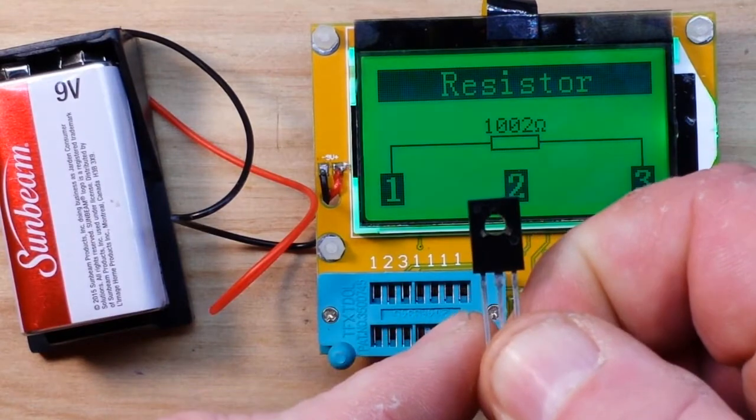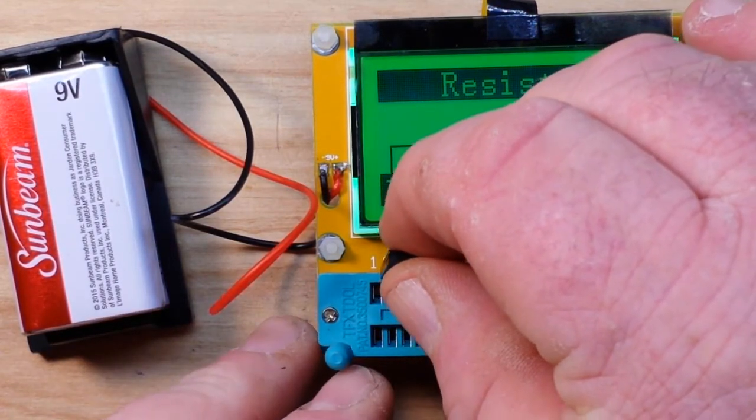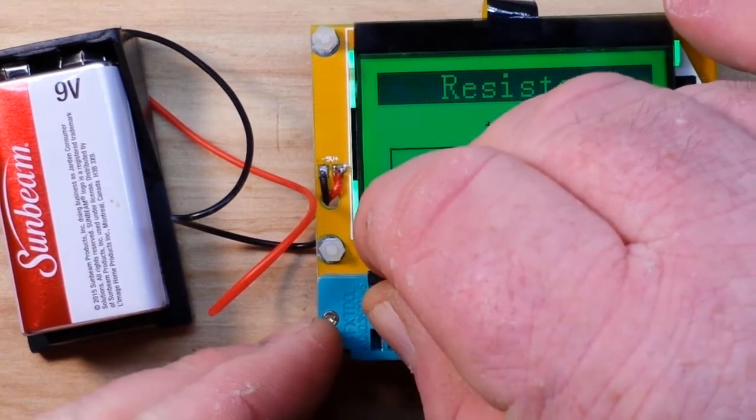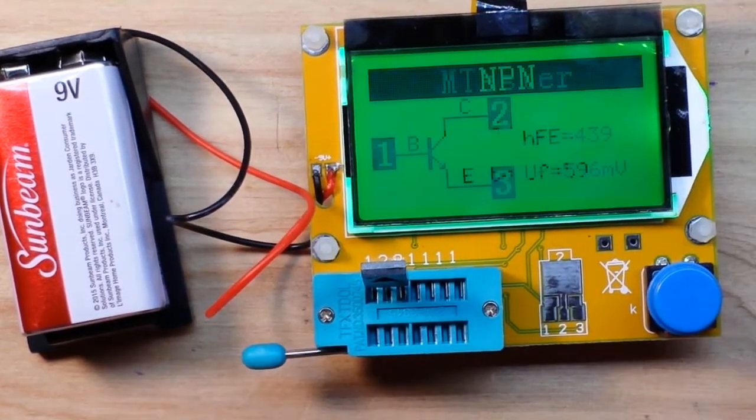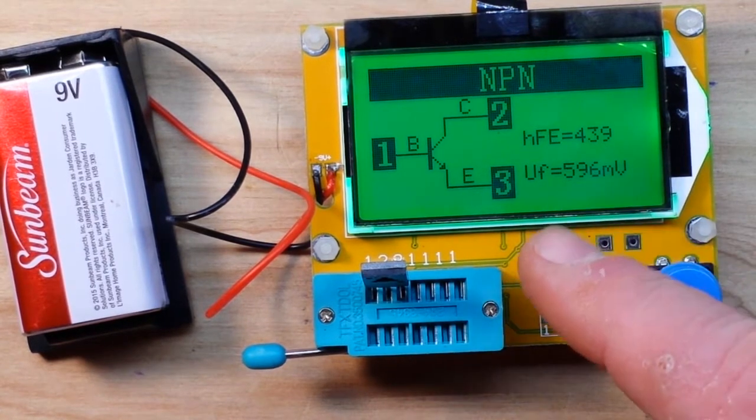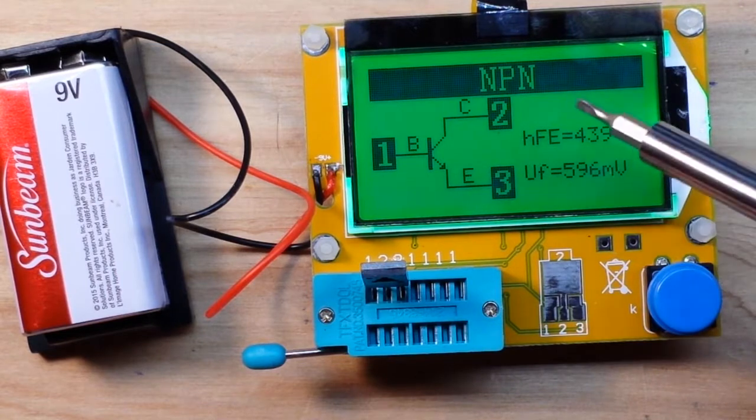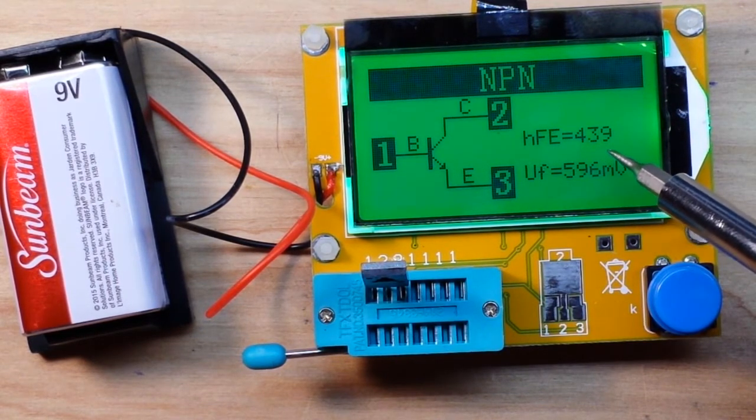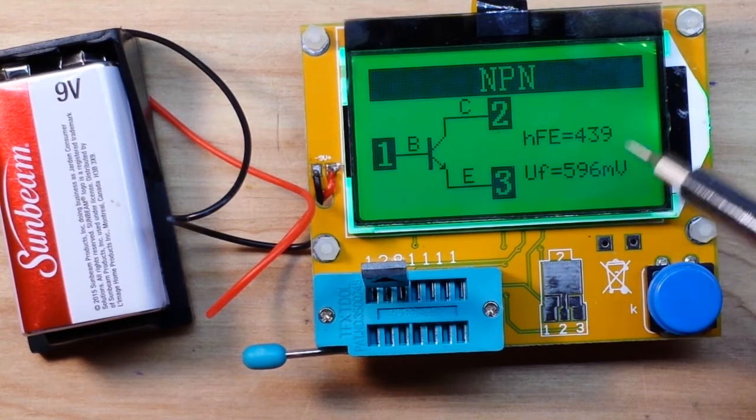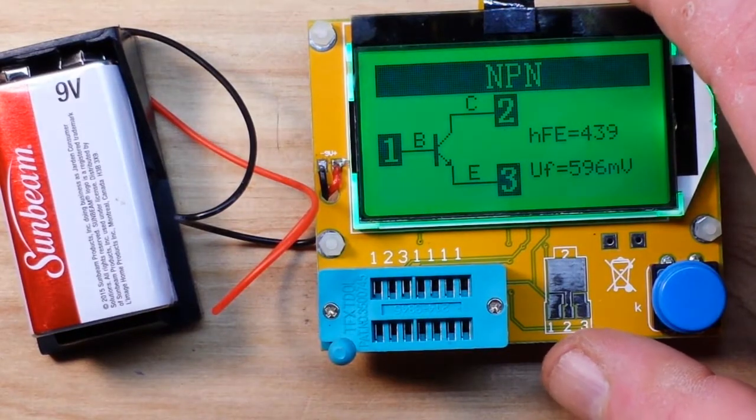Here's one of these funky, absolutely no name, no marking whatsoever transistors. Let's see what she's got. So it's an NPN. As you can see here, base collector emitter. The amplification is 439 and the forward voltage is 596 millivolts. So at least I can identify this now and know how to use it.